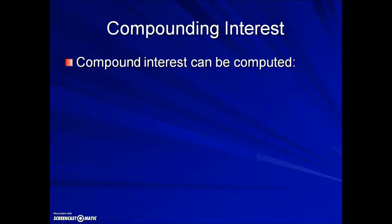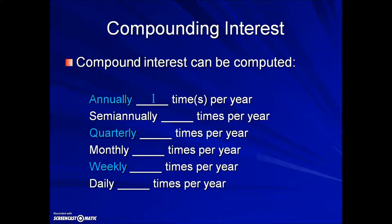Compound interest can be computed annually — once per year; semi-annually — two times per year; quarterly — four times per year; monthly — twelve times per year; weekly — fifty-two times per year; and daily — three hundred sixty-five times per year.